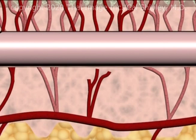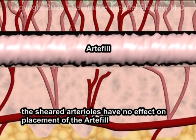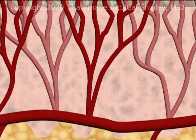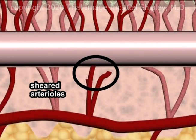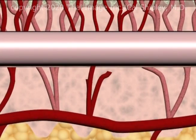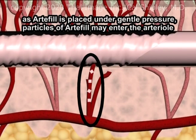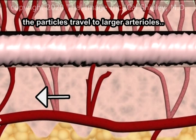In this example, Artefel has been used as the dermal filler of choice. The sheared arterioles do not interfere with the placement of the dermal filler. One or more of the sheared arterioles in the deep dermis may communicate with the tunnel created by the advancing needle. As the dermal filler enters the tunnel under pressure, particles of it may be pushed into the sheared arterioles. These particles travel to larger arterioles and ultimately into a nasal artery.